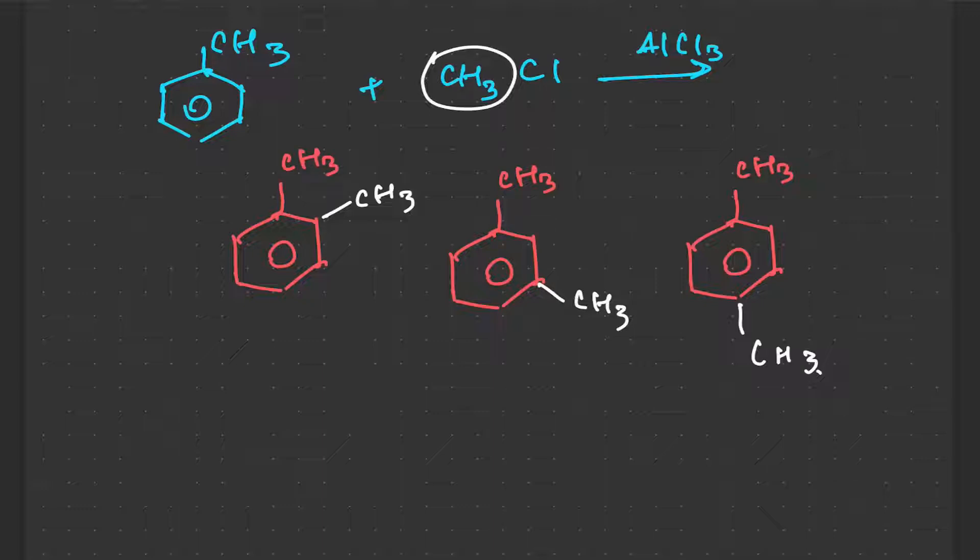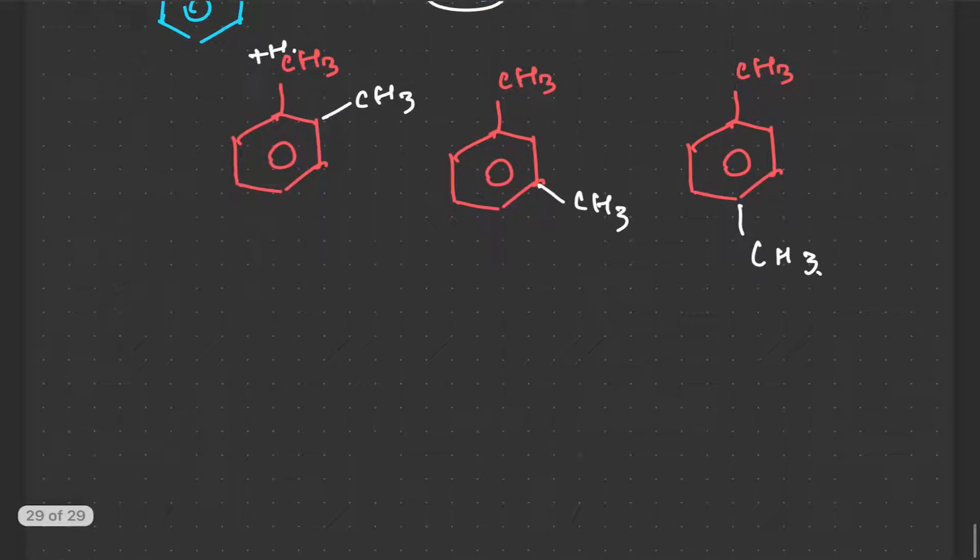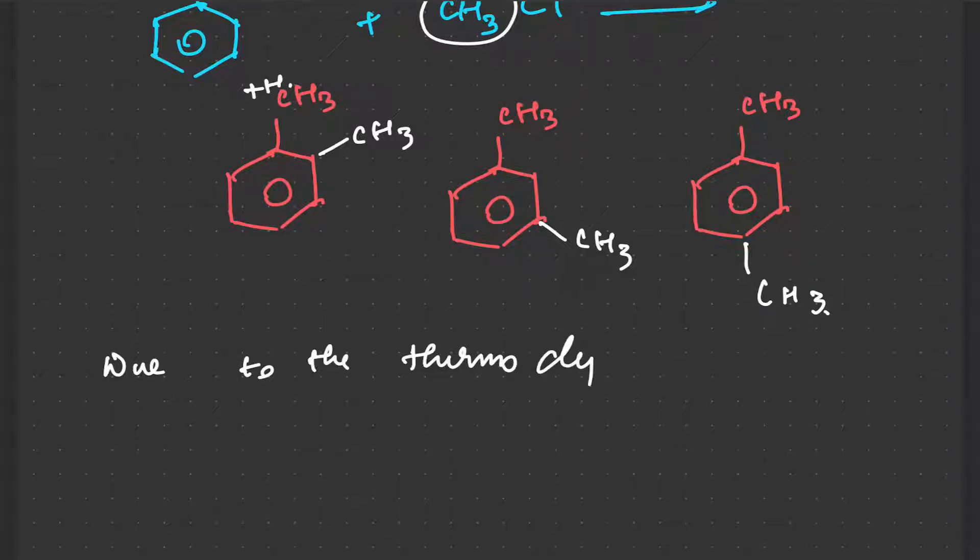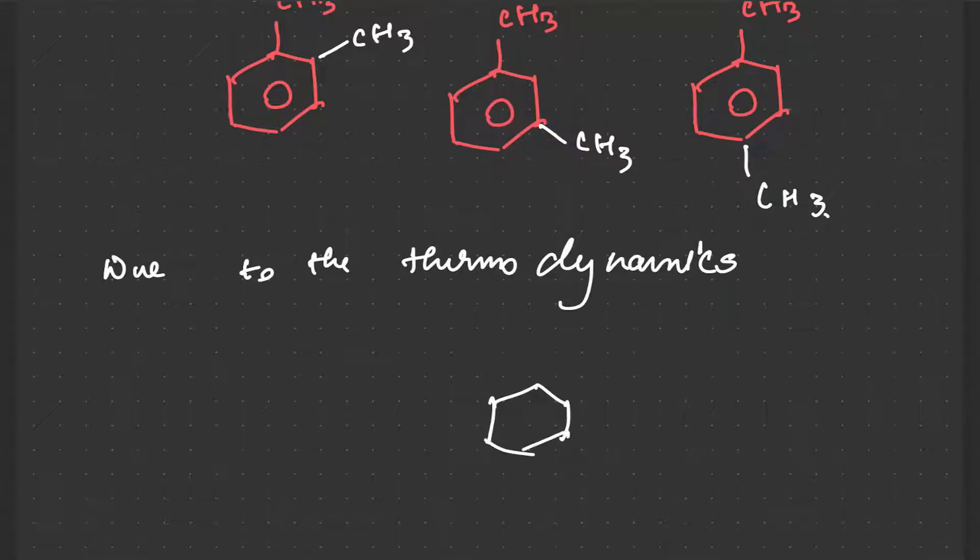Now, due to the procedure we had learned or the rules that we had learned, we saw that this is a +H group, so it would increase electron density at the ortho and para positions. So these two should be our major products, this or this. But what happens is here, these were the kinetic factors judging the reaction. But due to the thermodynamics of reaction, we get this as our major product, the meta side.